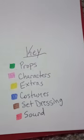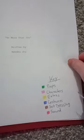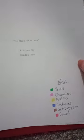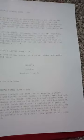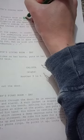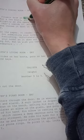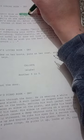After you finish color coding your key, open your script and start on page 1. Read through each scene and as you do so, highlight the things you have listed in your key.